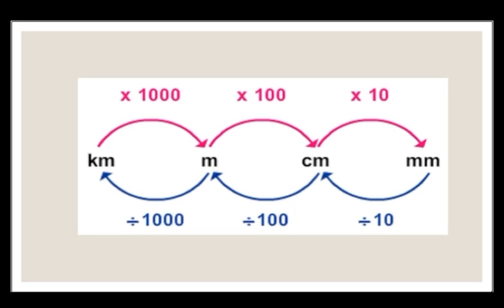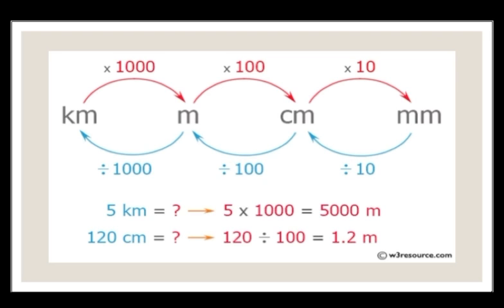So here is an example. If we go from kilometer to meter we need to do multiplication, and if we need to come back from meter to kilometer we need to do division. For example, 5 kilometers is equal to 5 multiplied by 1000, which equals 5000 meters.